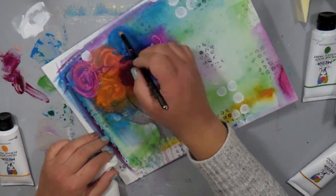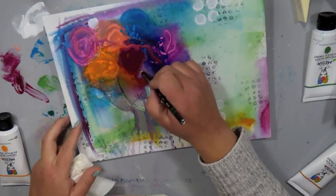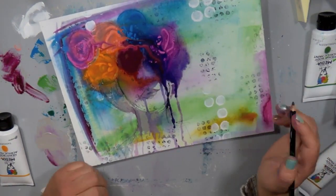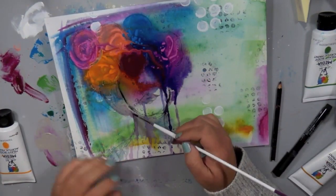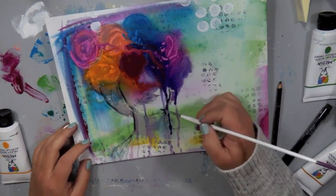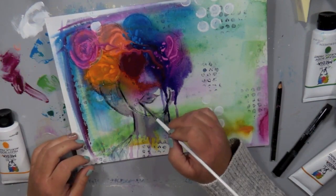Again you want to let that dry naturally. I did try to speed it up with a heat tool but that just does not work. You're going to change the texture of the paint. Just set it aside. You can work on something else. Let it dry and you're going to get some really interesting effects as those paints dry and blend and mix together.